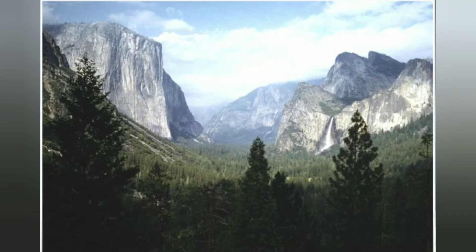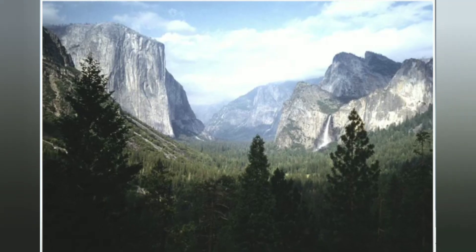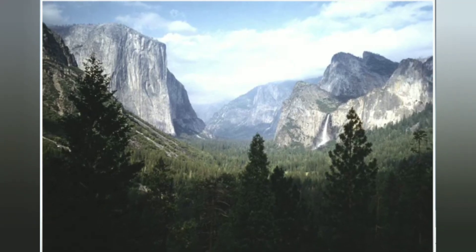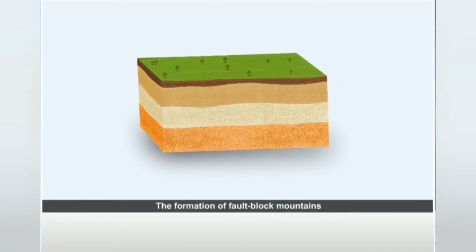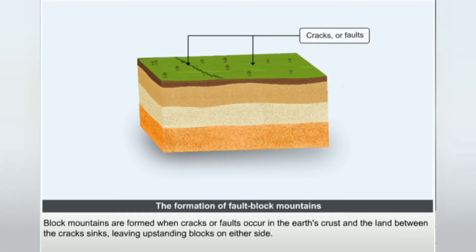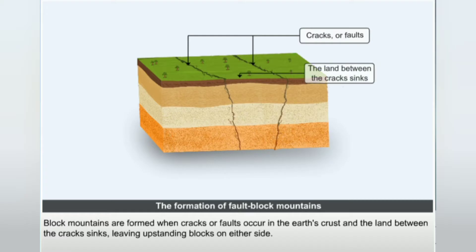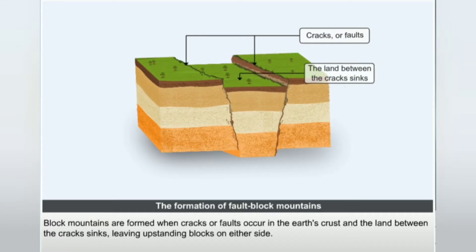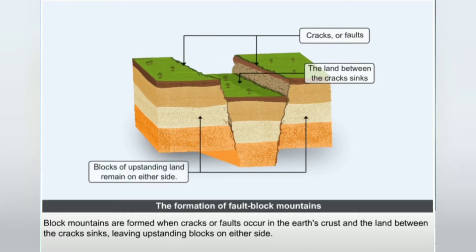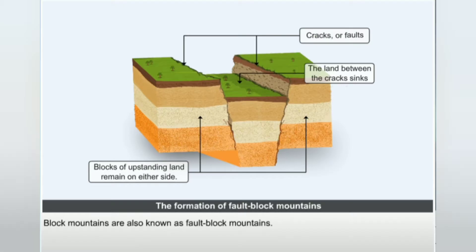Block mountains are formed when cracks or faults occur in the earth's crust and the land between the cracks sinks, leaving upstanding blocks on either side. Block mountains are also known as fault block mountains.